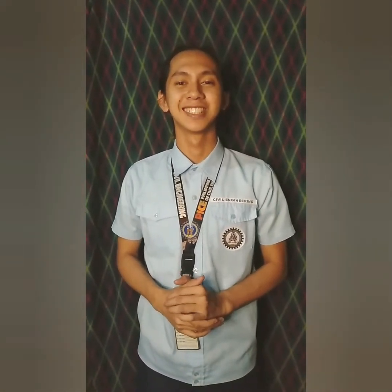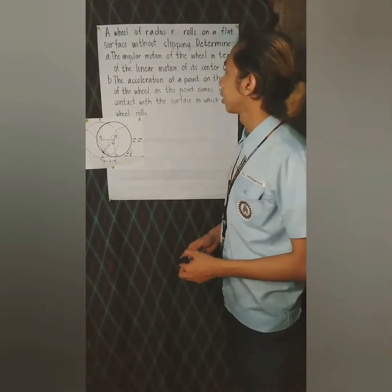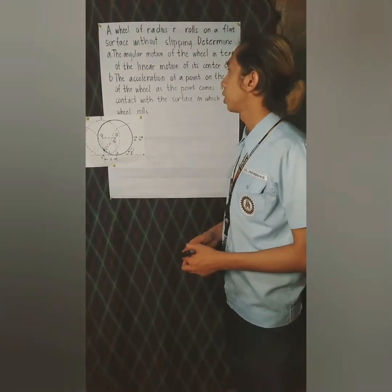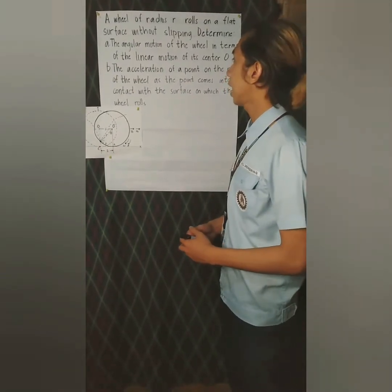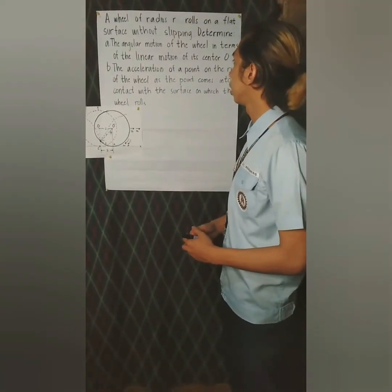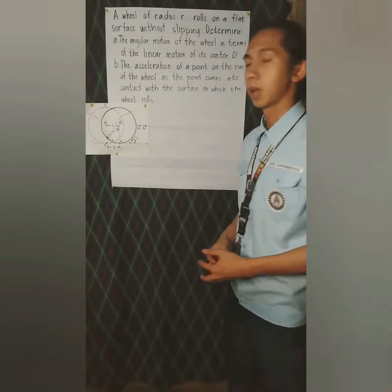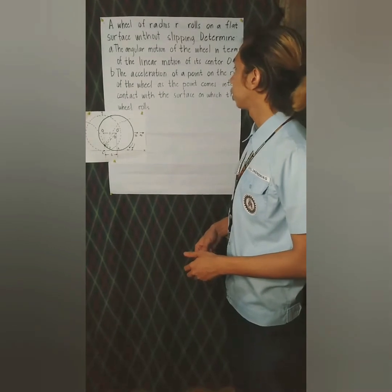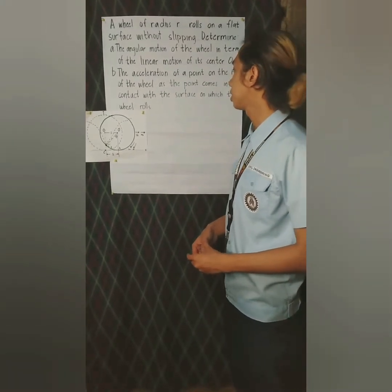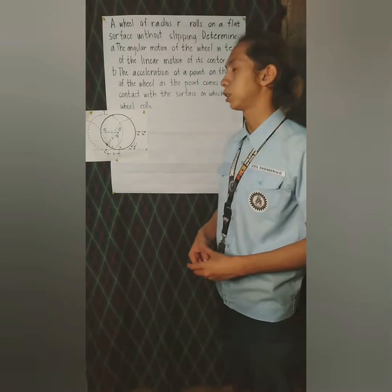We are going to talk about absolute motion. A wheel of radius R rolls on a flat surface without slipping. Determine A, the angular motion of the wheel in terms of linear motion of its center O; and B, the acceleration of a point on the rim of the wheel as the point comes into contact with the surface on which the wheel rolls.